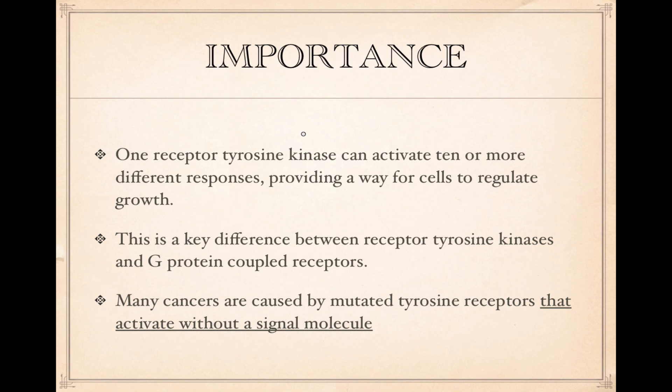Many cancers that affect humans, animals, and plants are caused by mutations to the DNA that builds the tyrosine receptors. Sometimes these mutations cause the tyrosine receptors to activate without a signal molecule, which can cause a cell to start growing out of control. Cancer is essentially when a cell stops listening to the control mechanisms that keep it normal and becomes malignant.